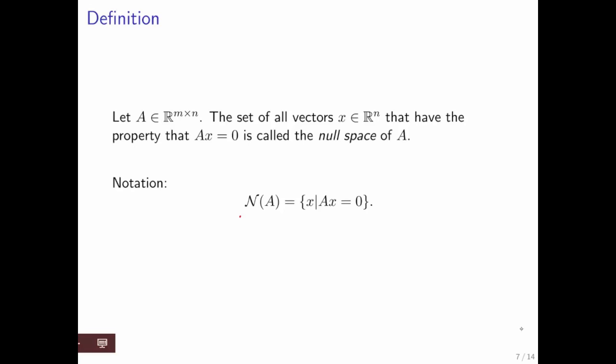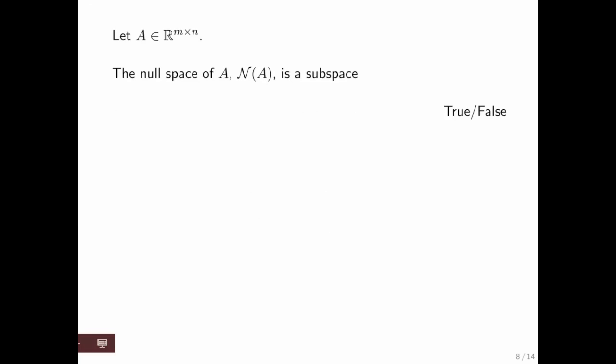The notation is the script N, which denotes the set of all vectors x such that Ax is equal to 0. The name null space kind of gives it away, doesn't it? So you can imagine that the null space of A is indeed a subspace.